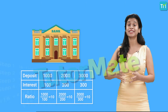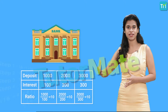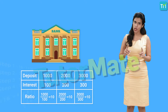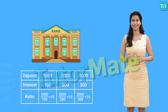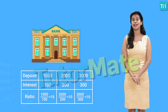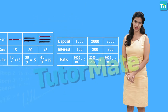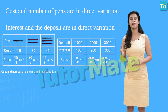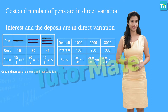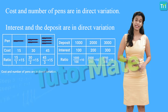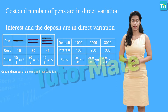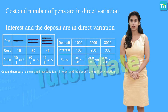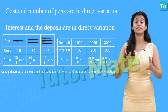You see, when one quantity increases the other quantity also increases, but the ratio of the first quantity to the second quantity remains constant in every situation. This is when we say that our first and second quantities are in direct variation. So we say that the total cost of pens and the total number of pens are in direct variation — as the number of pens increases, even the cost increases.